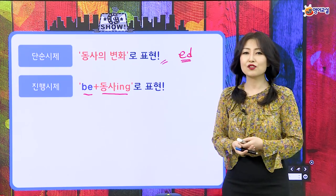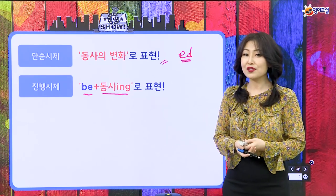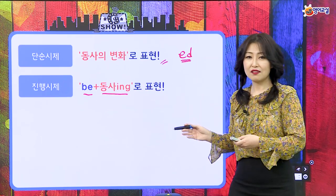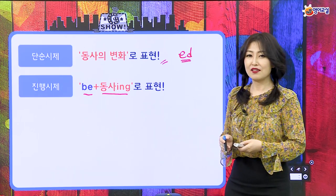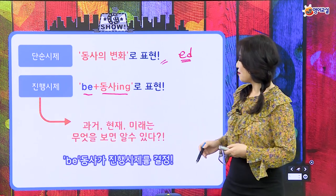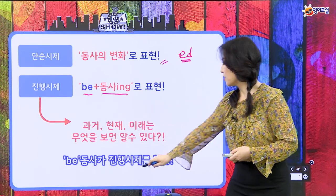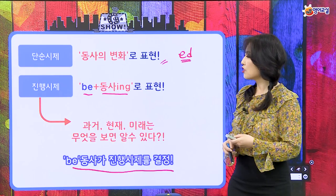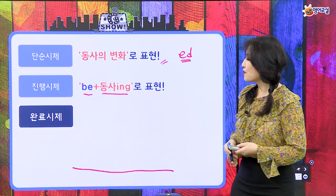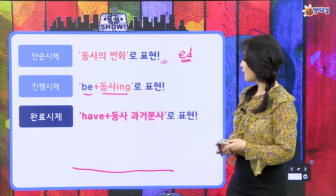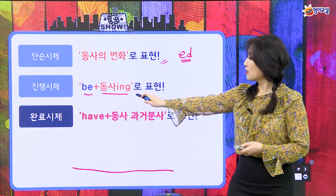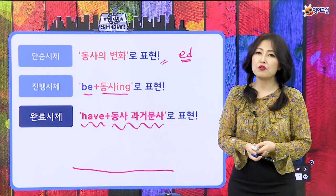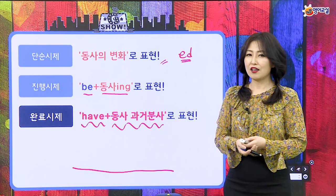I am speaking, I am teaching. 이런 식으로 be동사가 오고 동사에 ing를 붙였잖아요. 과거는 be동사가 과거형을 쓰면 되고, 미래는 be동사 앞에 will을 붙이면 됐어요. 이 진행 시제의 과거, 현재, 미래는 be동사가 진행 시제를 결정하는 거였어요. 그러면 오늘의 주인공, 완료 시제는 무엇을 갖고 만드는지 한번 볼게요.